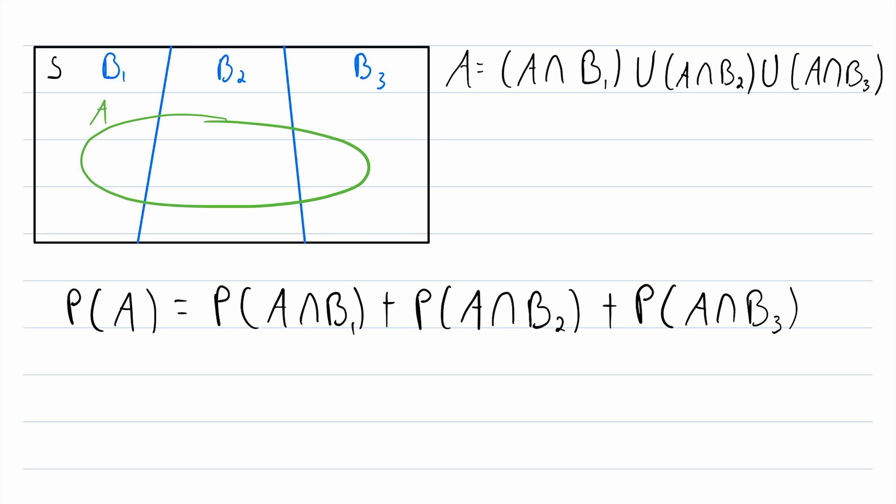This is an example of the law of total probability where our sample space is partitioned into three sets. But the law also applies when our sample space is partitioned into any countable number of sets — so it works with ten sets, twenty sets, a hundred sets, all the way up to a countably infinite number of sets.